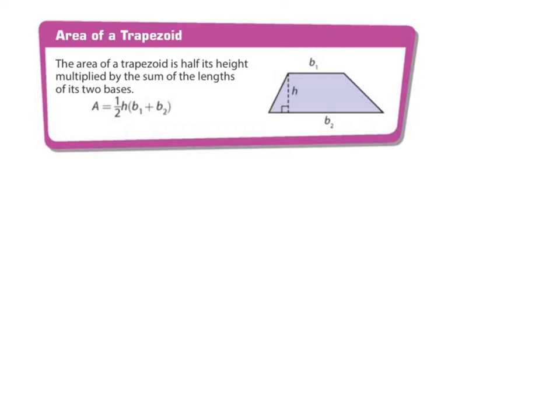Alright, so the next one we have is the area of a trapezoid. The area of a trapezoid is half of its height multiplied by the sum of the lengths of its two bases. So a trapezoid has two bases. There's this base and this base. We call this base 1, we call this base 2, and then this is the height. A line perpendicular to one base and it reaches to the other base. And then the formula is area equals 1 half times the height, so half of the height, and then I add the two bases together and multiply that times that. It's really simple. Let's go ahead and look at an example.